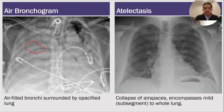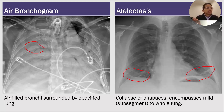You see these little linear opacities down here — these are atelectasis. This is what I would call subsegmental atelectasis. They're just little lines where the alveoli have deflated and there's no air in them. I would say this is minimal atelectasis.